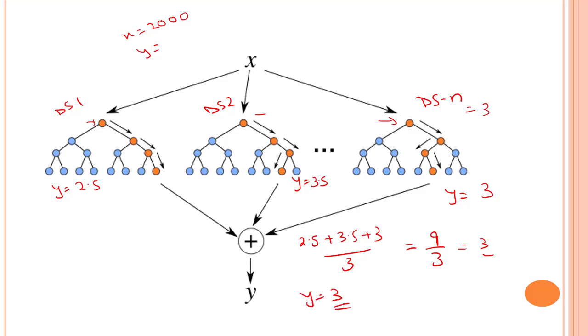The averaging makes a random forest better than a single decision tree, hence improves its accuracy and reduces overfitting. A prediction from the random forest regression is an average of all the predictions produced by the trees in the forest.